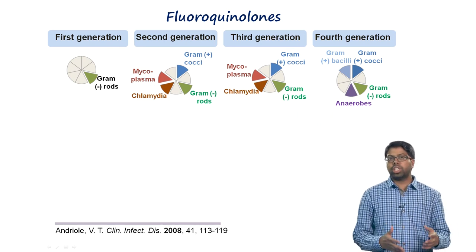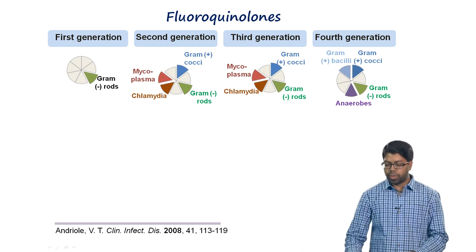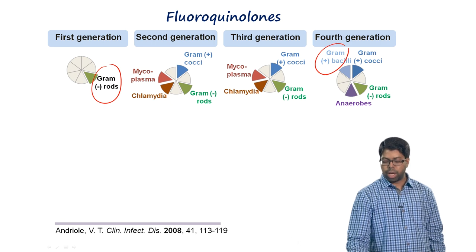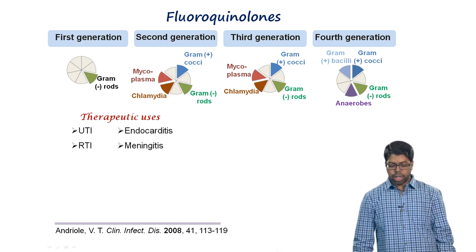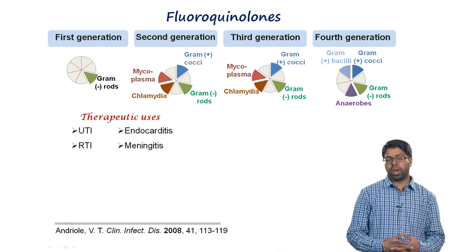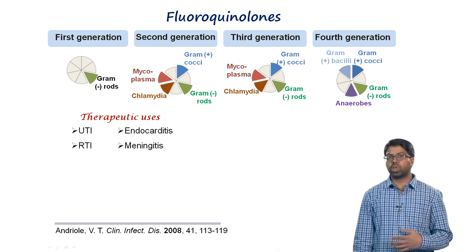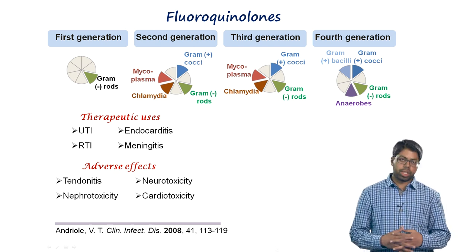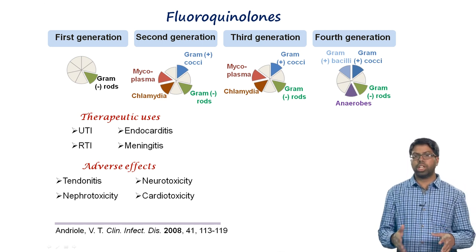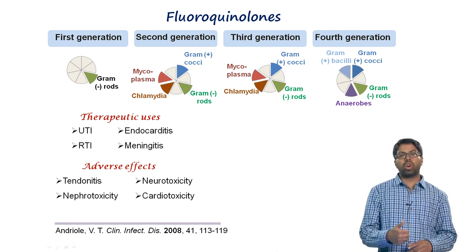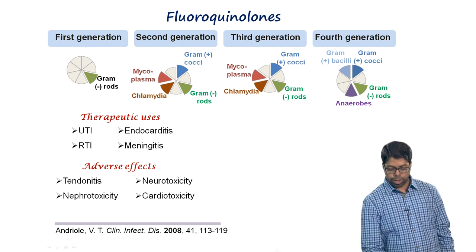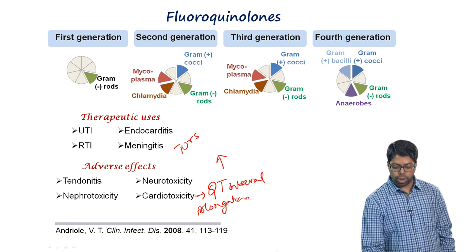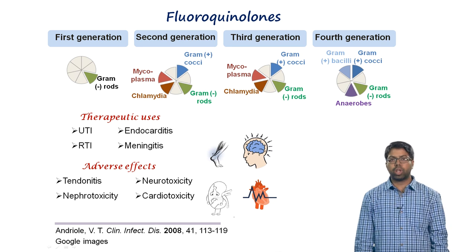As the generation of fluoroquinolones progresses, they become more effective against gram-positive organisms. Fourth-generation agents are effective against gram-negative, gram-positive, and even anaerobic microorganisms. Fluoroquinolones are prescribed for urinary tract infections, respiratory tract infections, endocarditis, and meningitis. However, major side effects include tendonitis, neurotoxicity, nephrotoxicity, and serious cardiotoxic effects such as QT interval prolongation, which can lead to torsades de pointes.